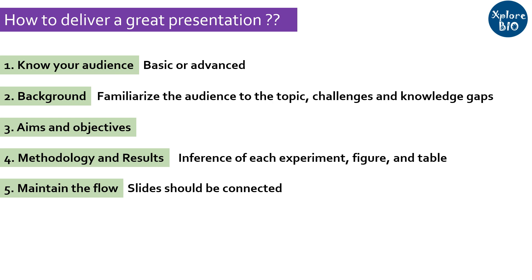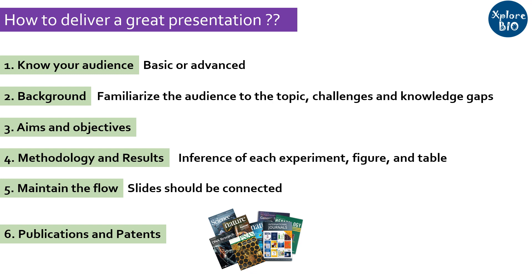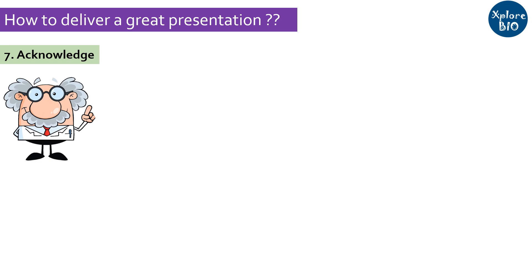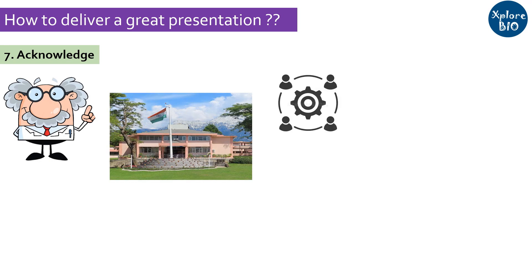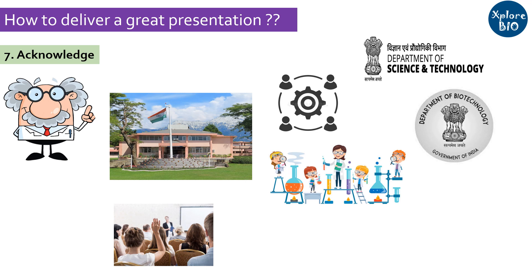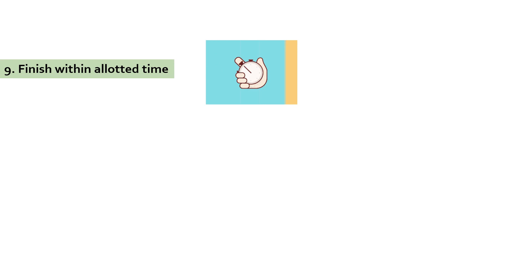It should be easy for the audience to understand what you did, why you did and what were the findings. Based on the findings, you again do certain experiments to find more answers. If your results need further validation, you may mention it too. After this, you may mention your relevant publications and patents. In the last slide, always acknowledge your supervisor, host institution, organizers and other researchers who contributed to your research and funding agencies who supported the research. Once the presentation is over, you may ask the audience for any questions they might have related to your work. Deliver the presentation within the allotted time.